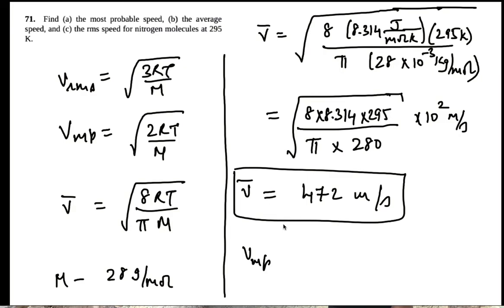We'll calculate the most probable speed. So we'll take the average speed multiplied by root of pi by 8, and then multiply it by root 2. So this works out to the most probable speed, which is the average speed times root of pi by 4.